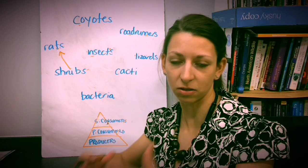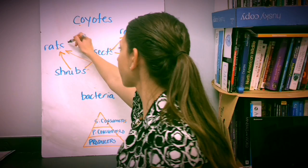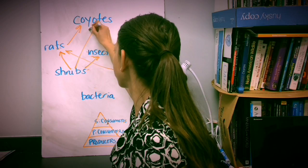All right, so the cacti can be eaten by the rats as well, so we'll draw an arrow to there. These insects can eat the shrubs, and lizards can eat the insects as well as the roadrunners. These are a type of bird, and the rats can be consumed by the coyotes. But the coyotes also might eat, for example, the shrubs if they are very hungry, and the coyotes can eat the roadrunners.